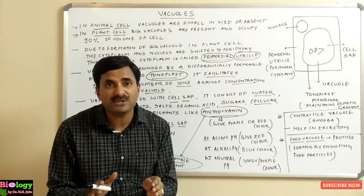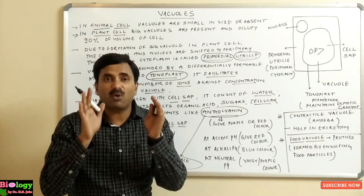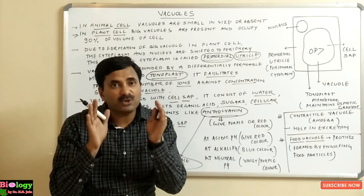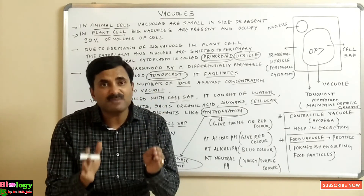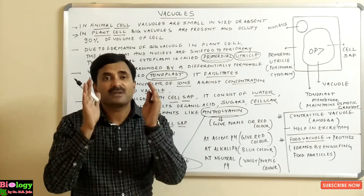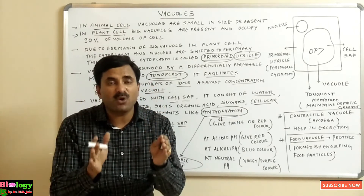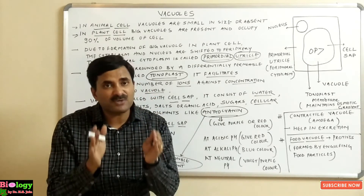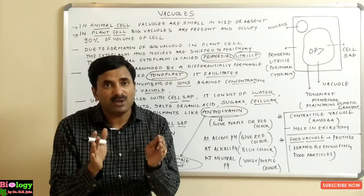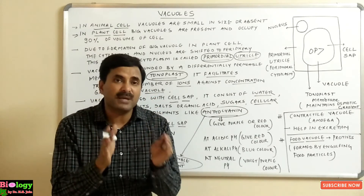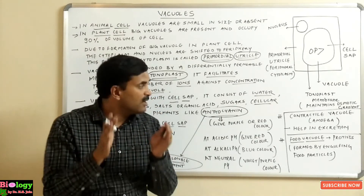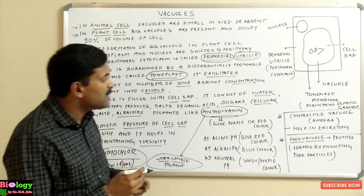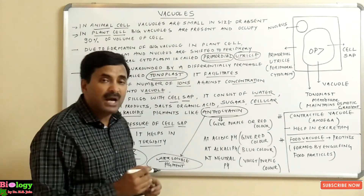Vacuoles are important for osmoregulation. They are also important for maintaining the osmotic gradient and are sometimes meant for the storage of excretory substances. These are the prime roles of the vacuole.